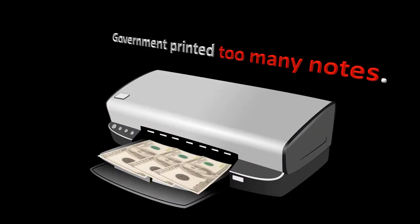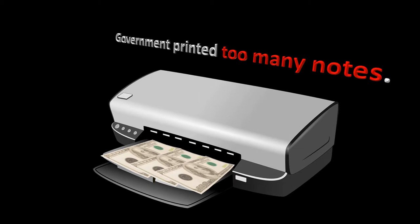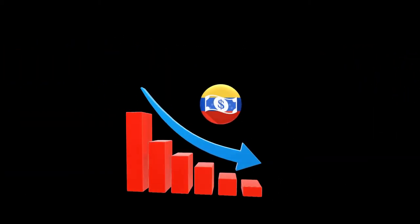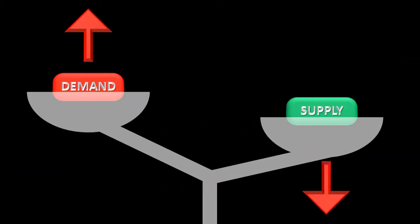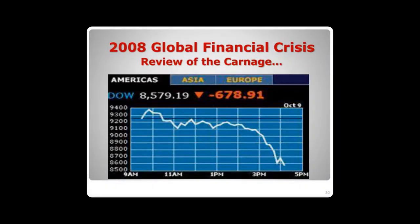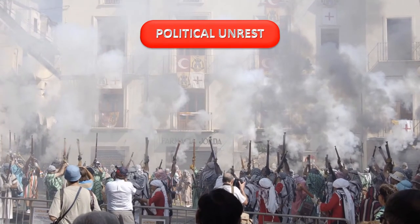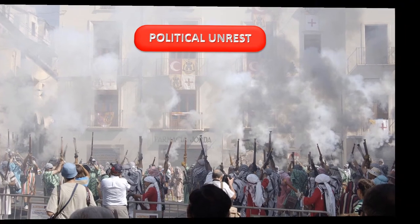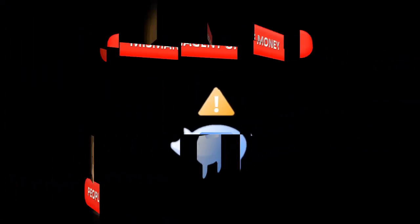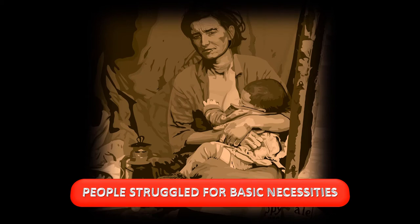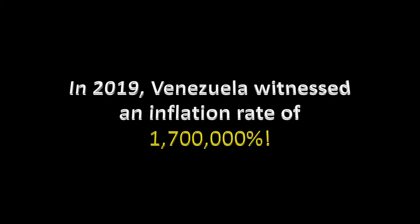In the case of Venezuela, it was mostly because the government printed too many notes, which caused the value of the currency to plummet. The high number of notes leads to an imbalance in the demand and supply chain of the economy. Venezuela was already in the midst of an economic crisis due to the 2008 global financial crisis, of which it was the worst affected country. There was also political unrest from quite a long time due to the mismanagement of money, because of which people struggled for basic necessities. In 2019, Venezuela witnessed an inflation rate of 1.7 million percent.